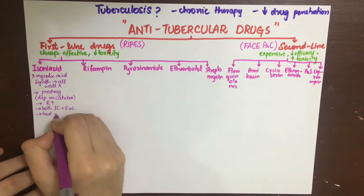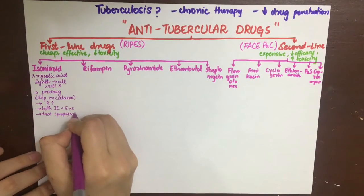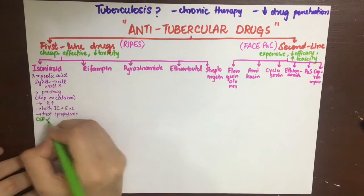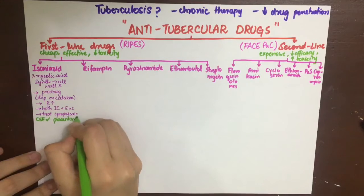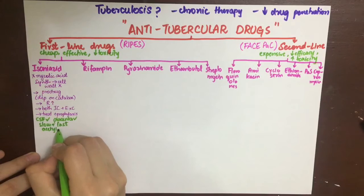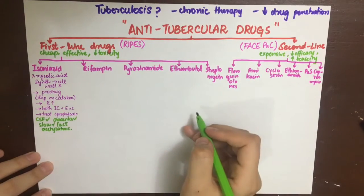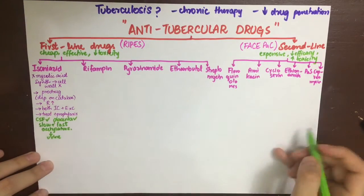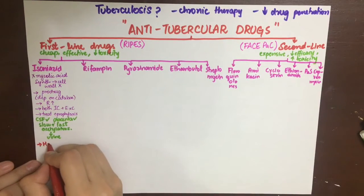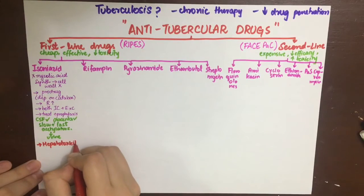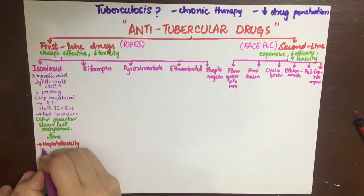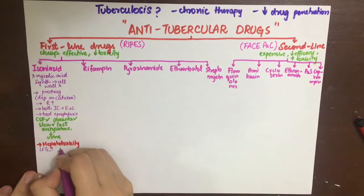Isoniazid can kill both intracellular and extracellular bacilli, and thus is used in both treatment and prophylaxis. Its pharmacokinetic properties include the ability to cross the blood-CSF barrier, the placenta, and tubercular cavities. It is metabolized by acetylation in the liver and excreted in the urine, with metabolism dependent on slow and rapid acetylators.